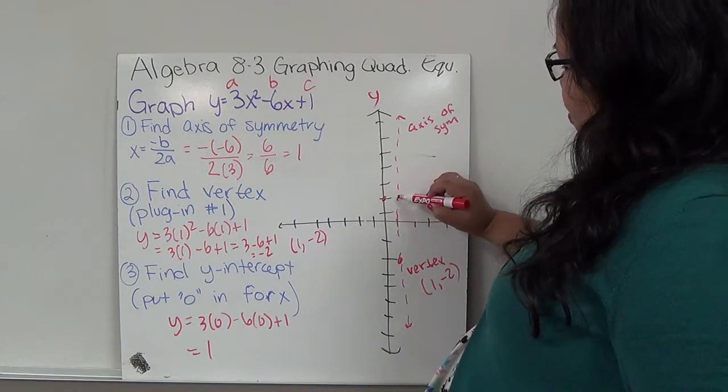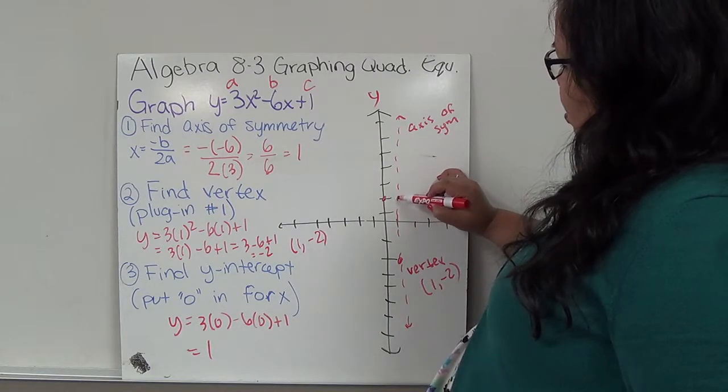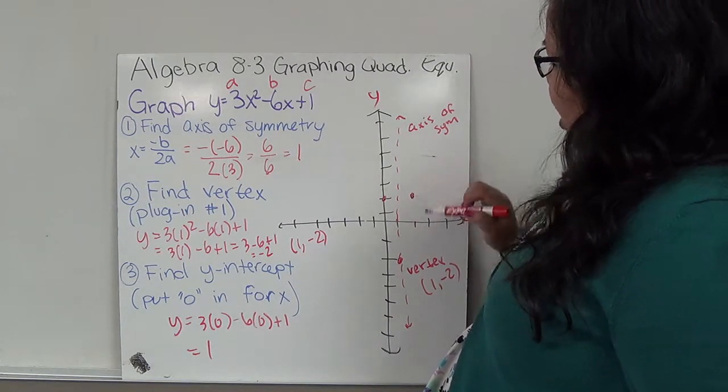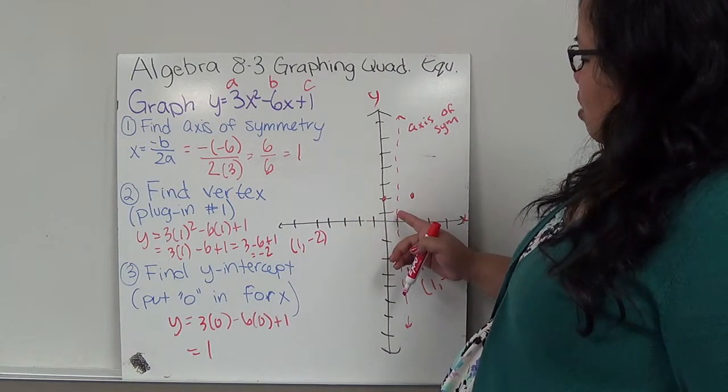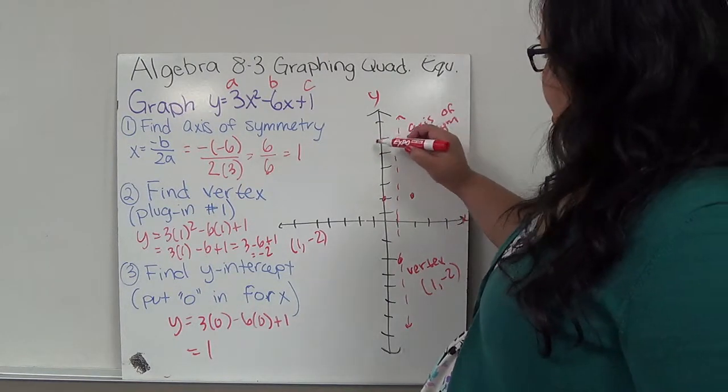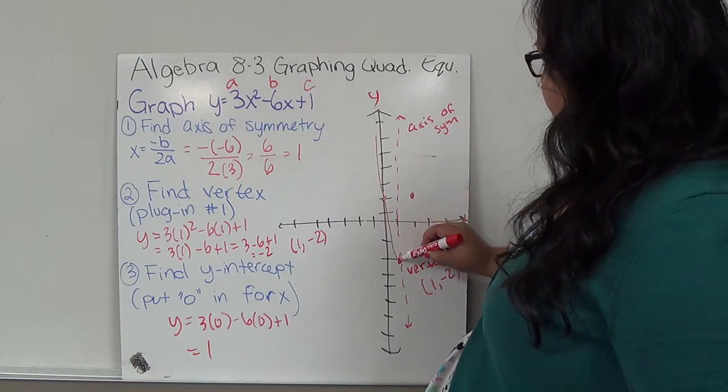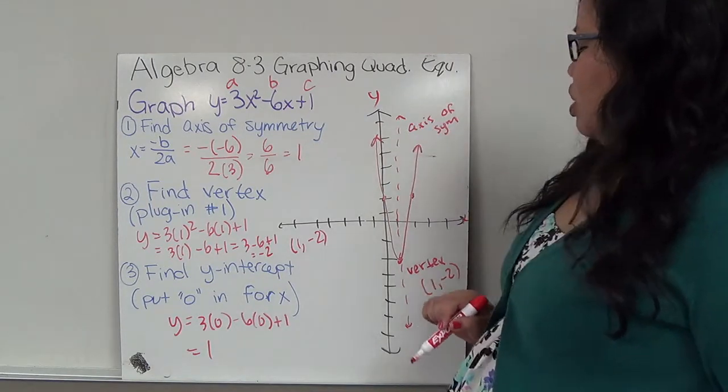This is 1 away from the axis of symmetry, so that means on the other side, it's 1 away. So any point that I find on this side, I find the distance to the axis of symmetry, and I can mirror it. Same thing if I find it on this side, I can mirror it on this side. Now that I have those points, I have 1 on each side, and I have the vertex. This is what my graph looks like.